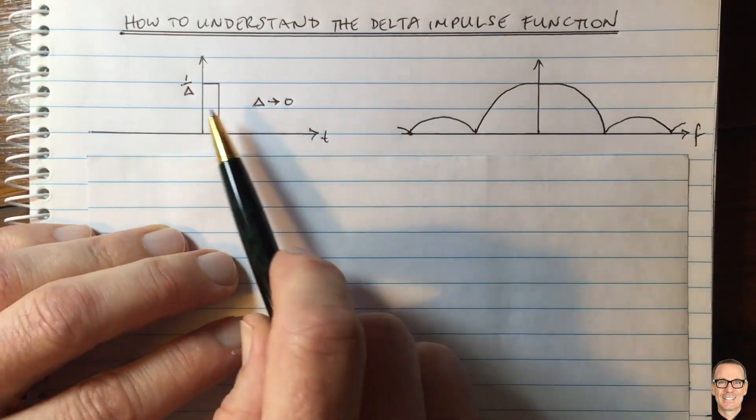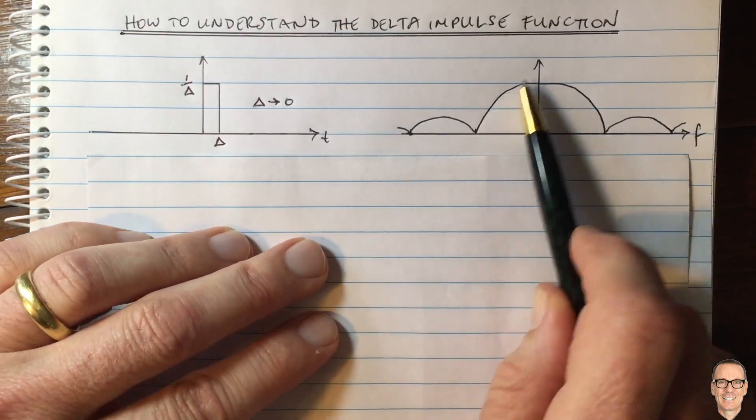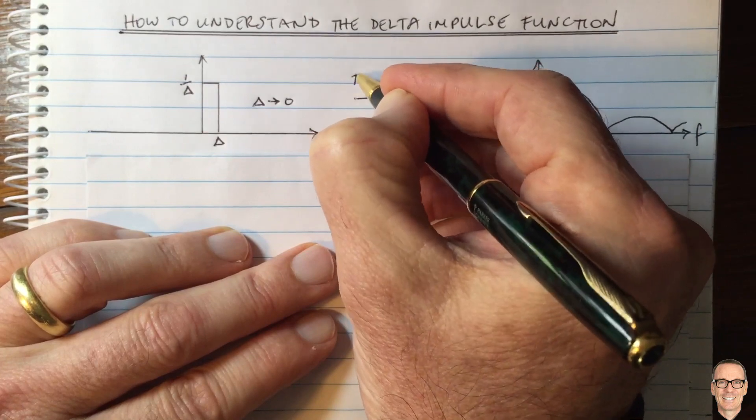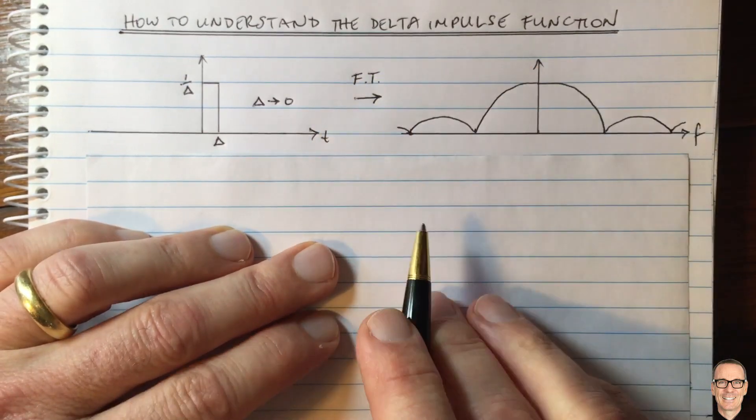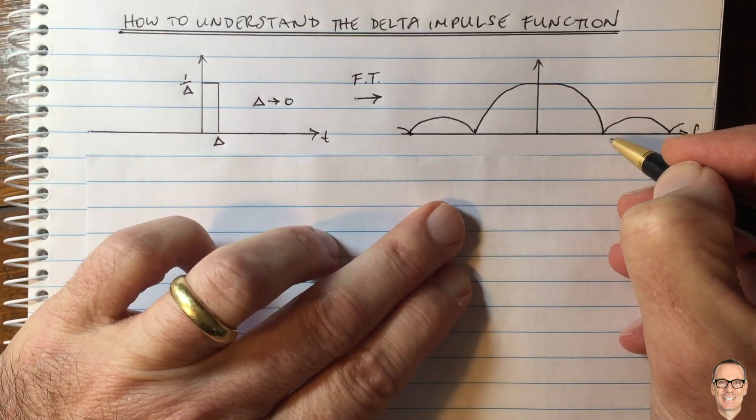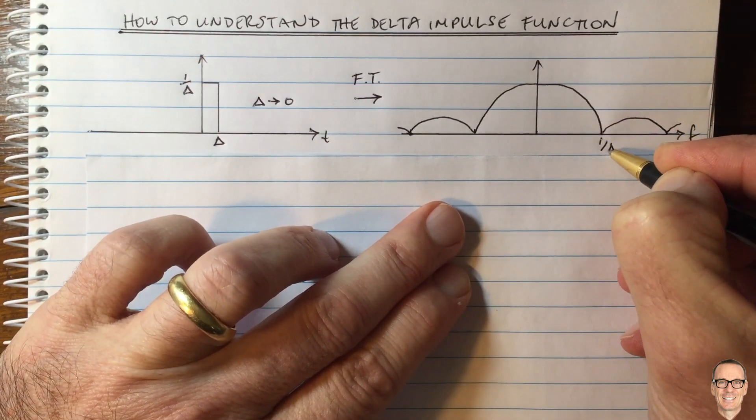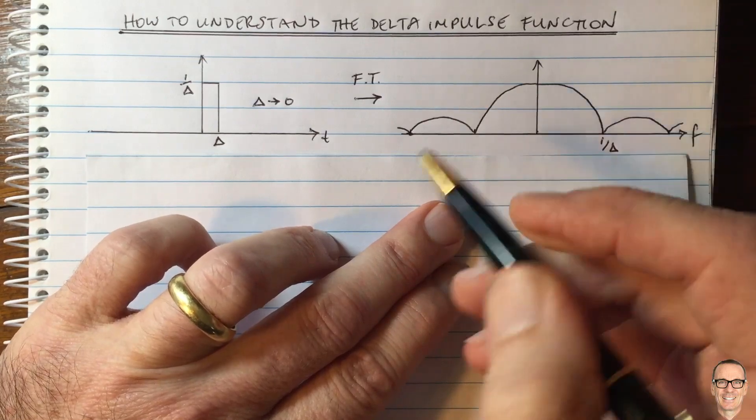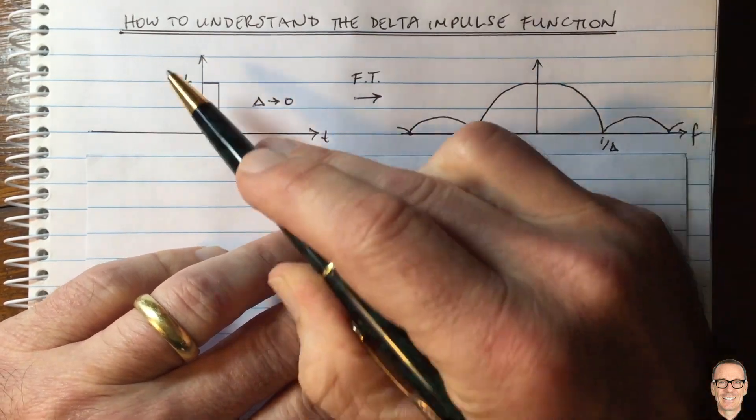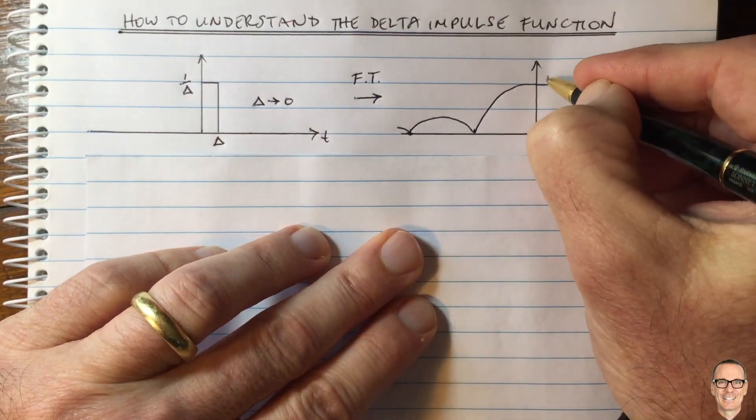In the frequency domain, the rect function is a sinc function through the Fourier transform. More details on this you can find in videos in the description below. The width of this equals 1 divided by delta, and the height equals the area of the rect. So that equals 1 divided by delta times delta, so the height equals 1.